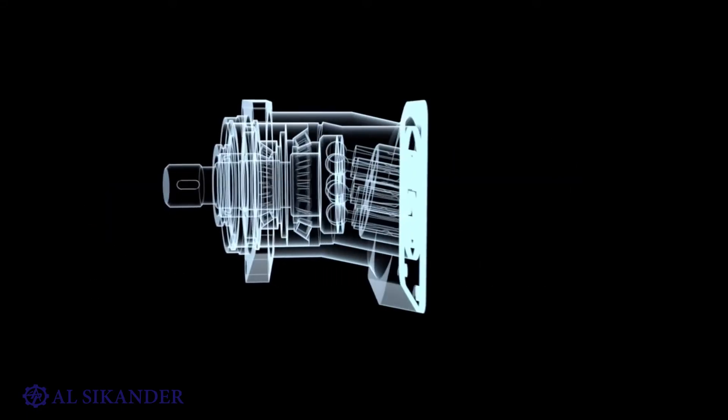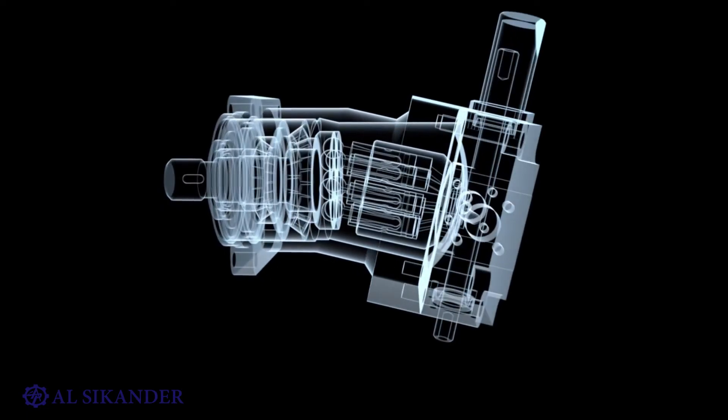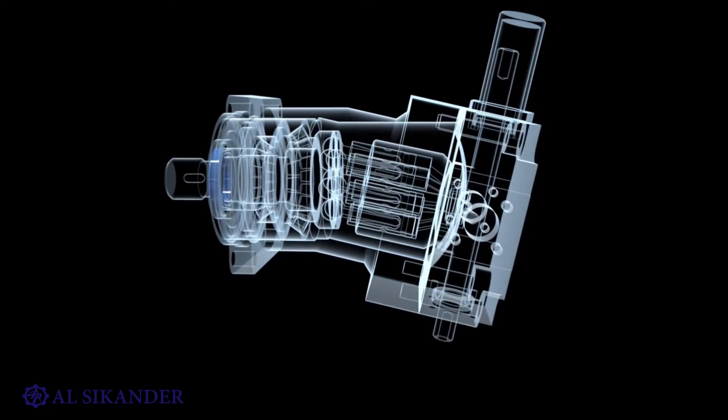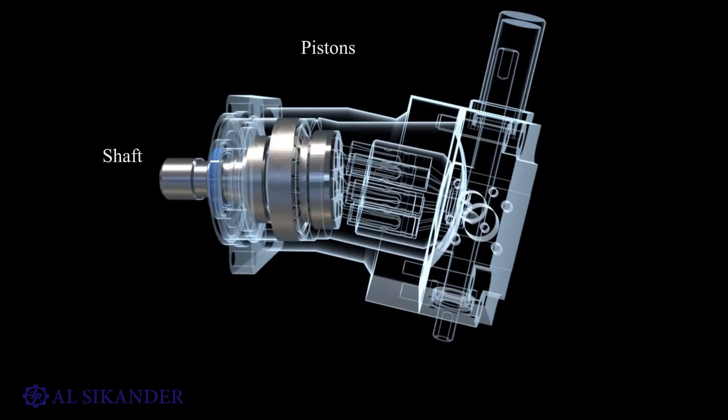The pump casing has a characteristic curved shape. A shaft is mounted in the casing on bearings. Pistons are attached to the shaft by means of spherical supports and placed in a tilting block mounted on an axle.